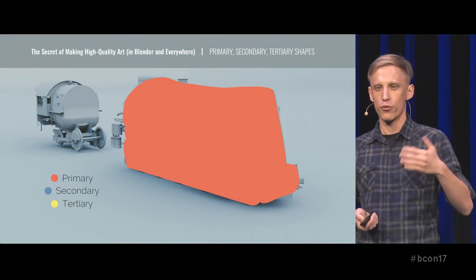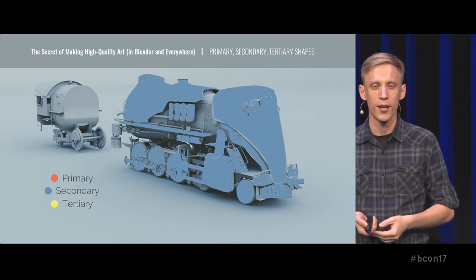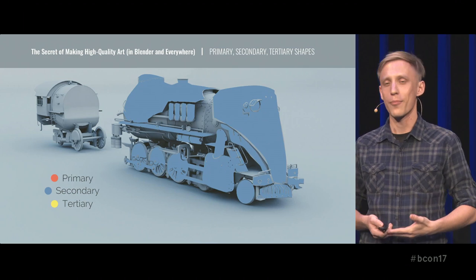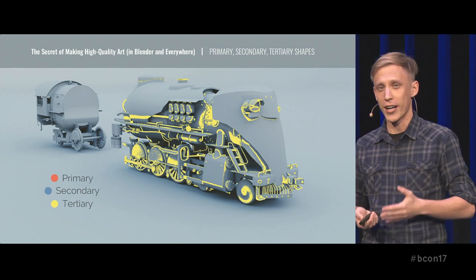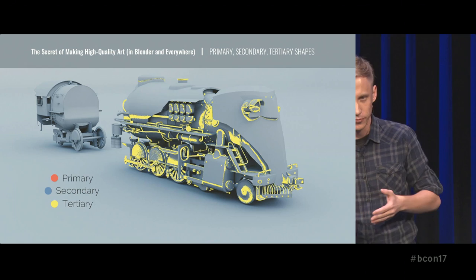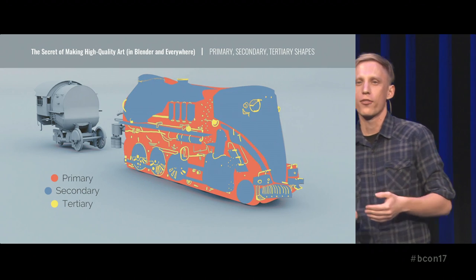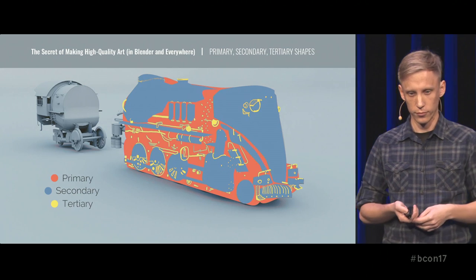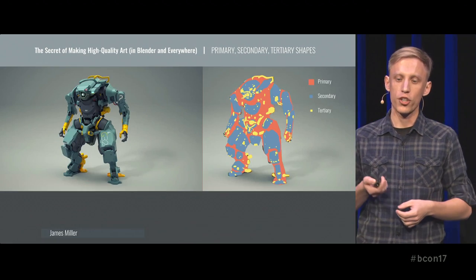But before we ask what the heck, let's try to make sense of it. Definitions first. Primary shapes are your big shapes — it's the kind of shape that you see if you squint at an image; as soon as you blur your eye, it already reads. Secondary shapes are smaller shapes that break up or sit on top of the primary shapes. Tertiary shapes are even smaller details. Successful images tend to have all three levels in place, balanced against each other. Big shapes are needed because they help to organize all other shapes.